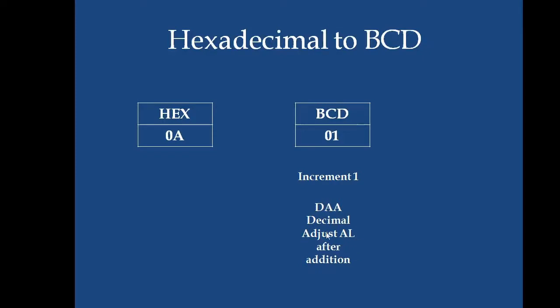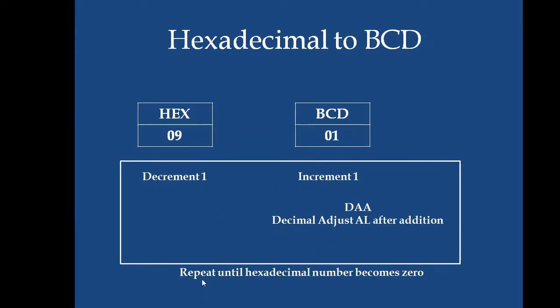Then, the hexadecimal is decremented by 1. From A, it becomes 9. This three set of operations are repeated until this hexadecimal value becomes 0.